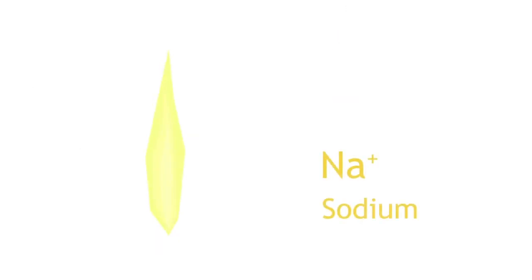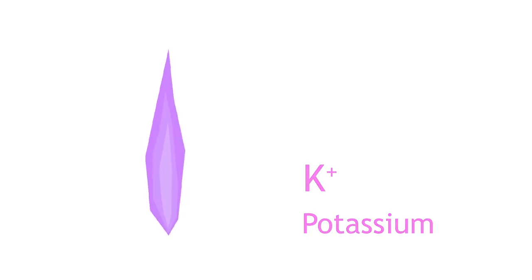Sodium ions produce a yellow orange flame. Potassium ions produce a lilac flame. Calcium ions produce a brick red flame. Strontium ions produce a red flame. Copper ions produce a blue flame. And barium ions produce a light green flame.